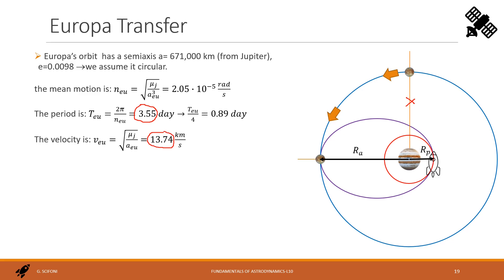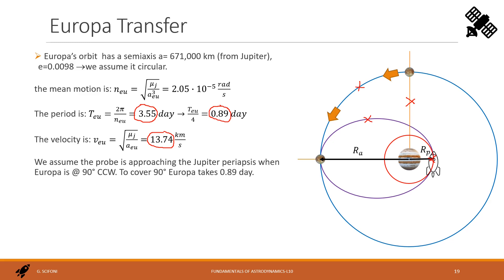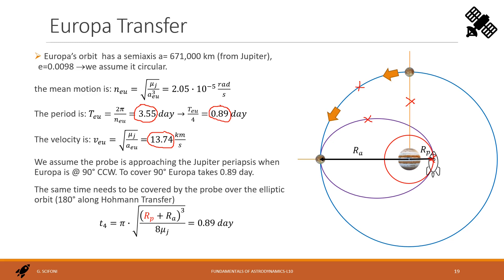We assume the probe is approaching Jupiter's periapsis when Europa is at 90 degrees forward — it turns counterclockwise. To cover a quarter circle, Europa needs 0.89 days. The same time must be covered by the probe on an elliptic Hohmann transfer orbit to target Europa. In the Hohmann time formula, the semi-axis is half the sum of the Jupiter periapsis and the Europa orbit radius. Since the time and Europa's orbital radius are known, the only unknown is the Jupiter periapsis, which we find to be 174,407 km — the reason we targeted exactly that periapsis radius.